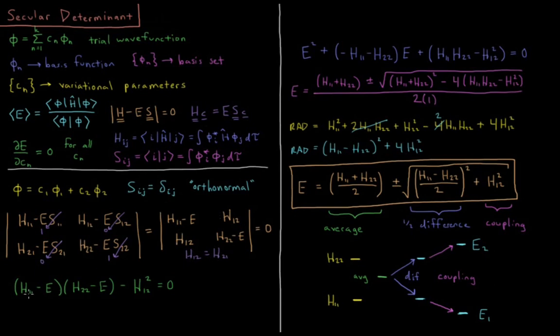Now we need to solve this determinant for it equaling zero. For a 2 by 2 determinant, we do top left times bottom right minus top right times bottom left. For a 3 by 3 and any bigger determinant it gets more complicated, but for a 2 by 2 it's nice and simple. So we have h11 minus e times h22 minus e, then minus h12 squared equals 0.